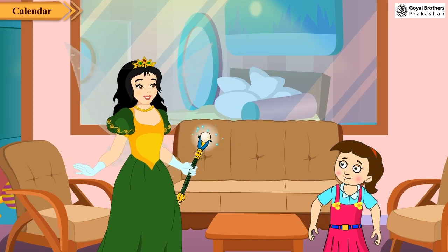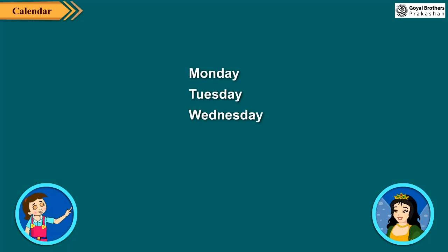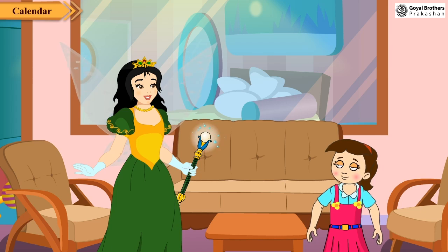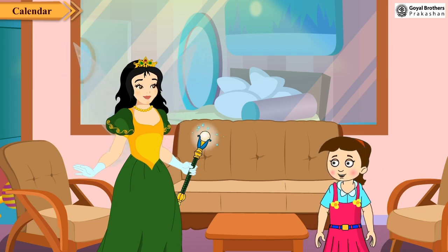There are seven days in a week. These are Monday, Tuesday, Wednesday, Thursday, Friday, Saturday and Sunday. After Sunday, again comes Monday. This repetition goes on.